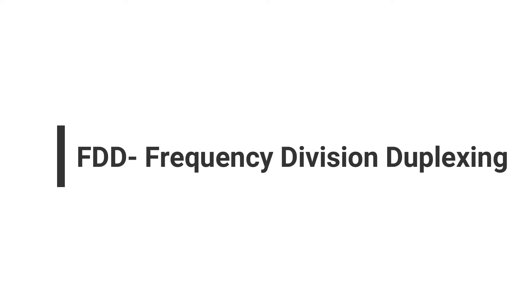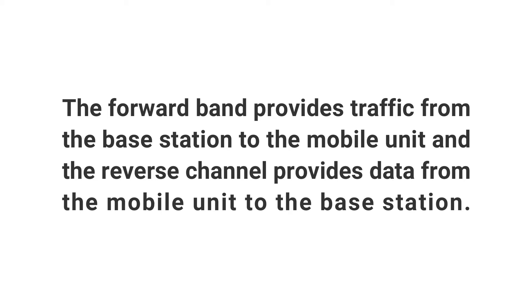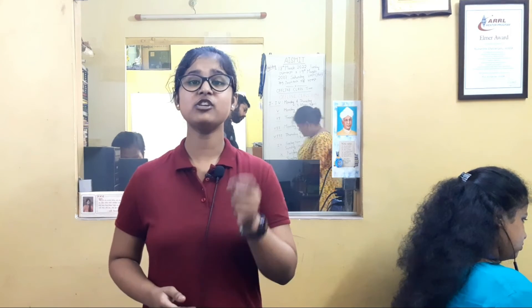Frequency Division Duplexing — In FDD, each duplex channel consists of two simplex channels and a duplexer at each unit, that is the base station and the mobile unit. The forward band provides traffic from the base station to the mobile unit, and the reverse channel provides data from the mobile unit to the base station. At any instance of time, the frequency split is constant. If F1 represents the frequency of the forward band and F2 represents the frequency of the reverse band, then the frequency split F1 minus F2 is constant. FDD is used in radio communication that provides individual radio frequencies to each user. Since the transmitter provides simultaneous transmission and reception of data, it is necessary that there is proper coordination among the two channels.